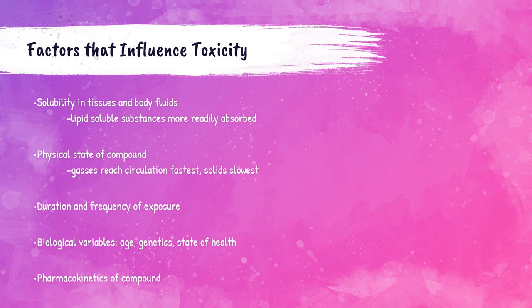There are a couple of factors that influence how toxic something is to the human body. How soluble the compound is in tissues and body fluids — if the compound is lipid soluble, it's more readily absorbed by the body and could be more toxic. The physical state of the compound also influences toxicity. If the compound is a gas, it can reach the circulation much quicker than a solid compound, so you're going to be more quickly affected by something you inhale versus something that is solid.